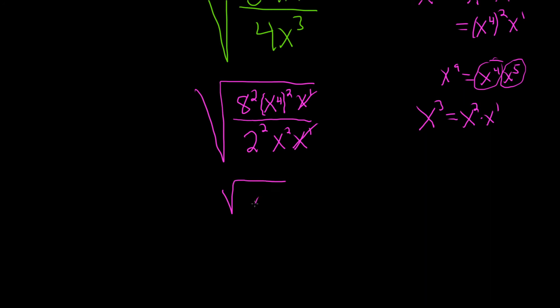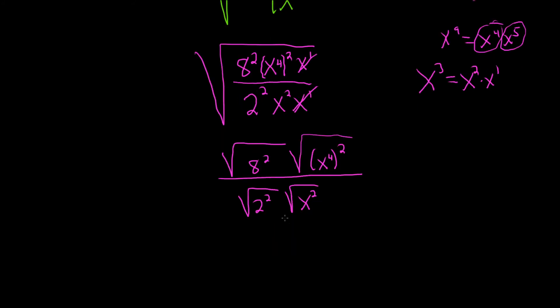So this is the square root of 8 squared, the square root of x to the 4th parentheses squared, over the square root of 2 squared, the square root of x squared. By the way, all variables here are assumed to be positive.